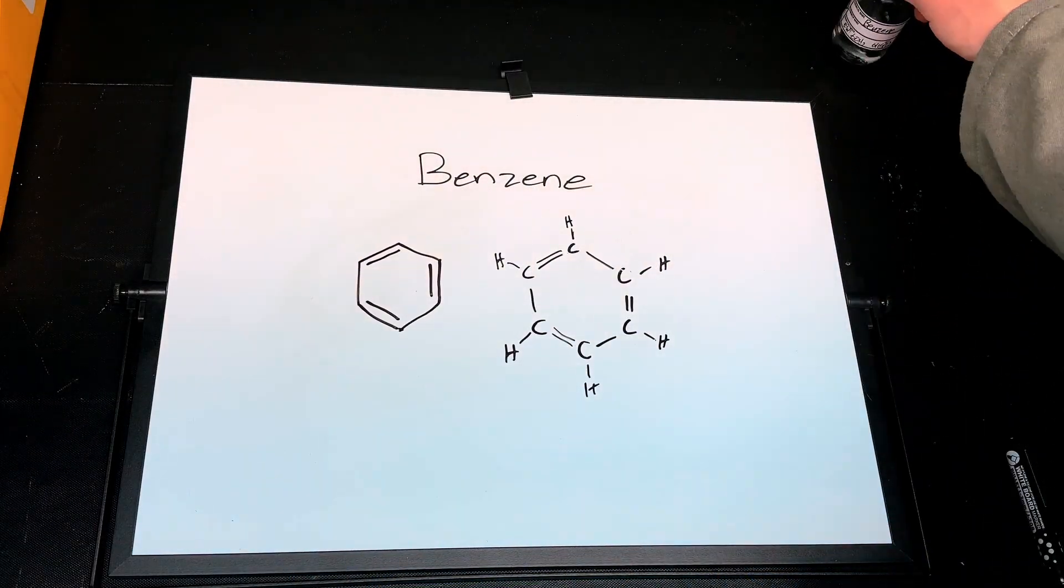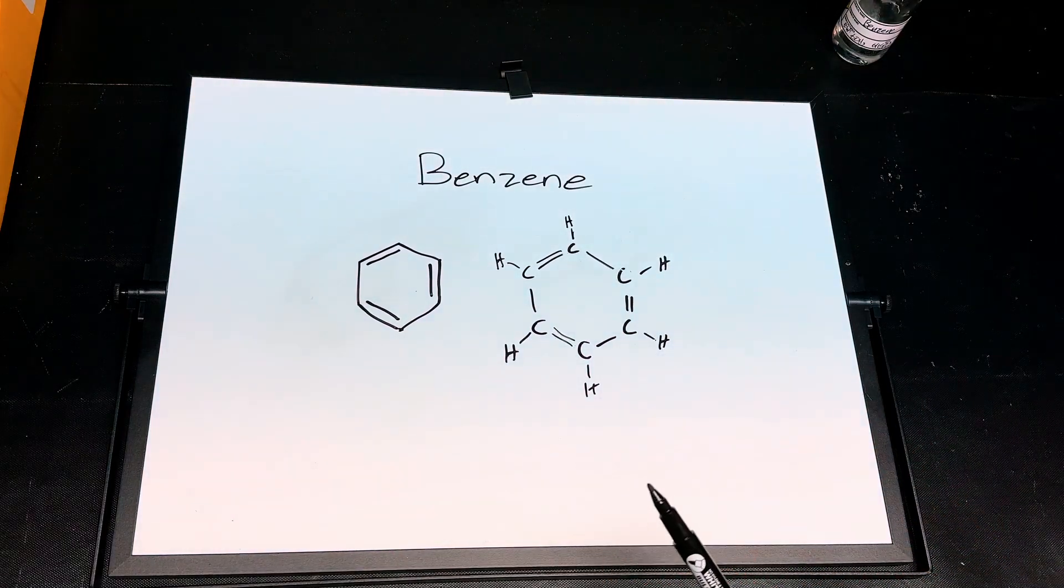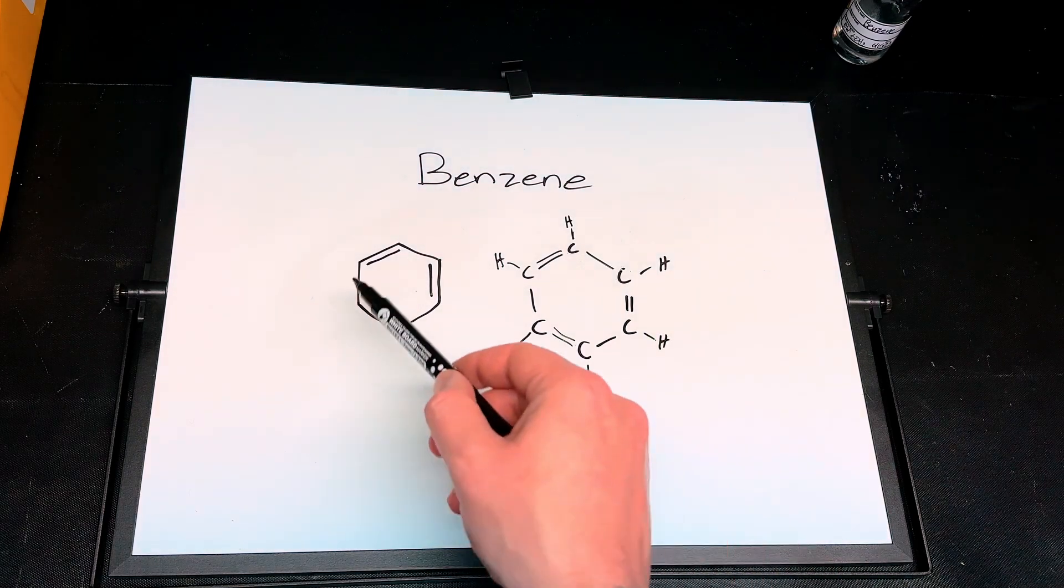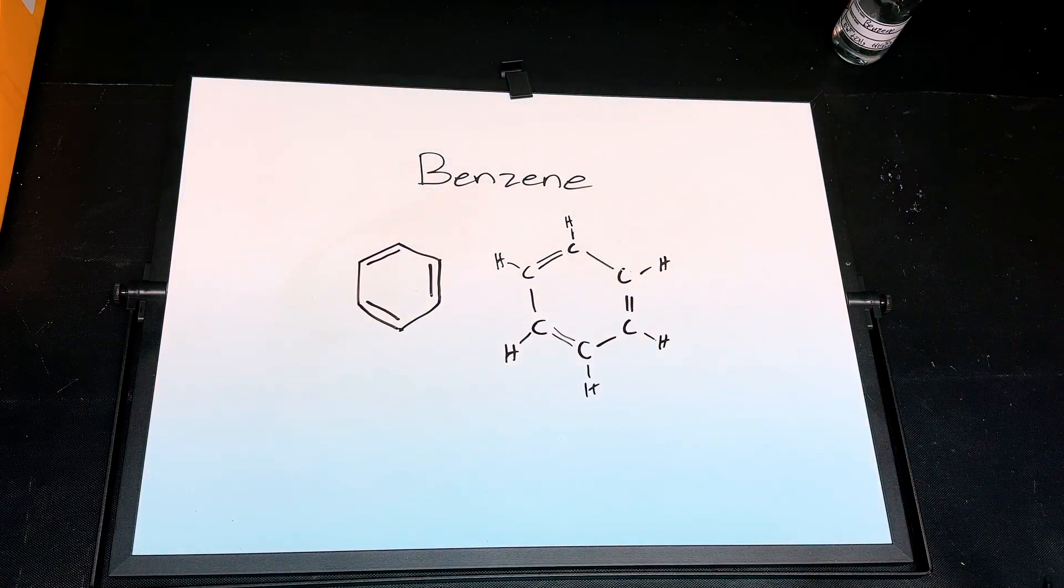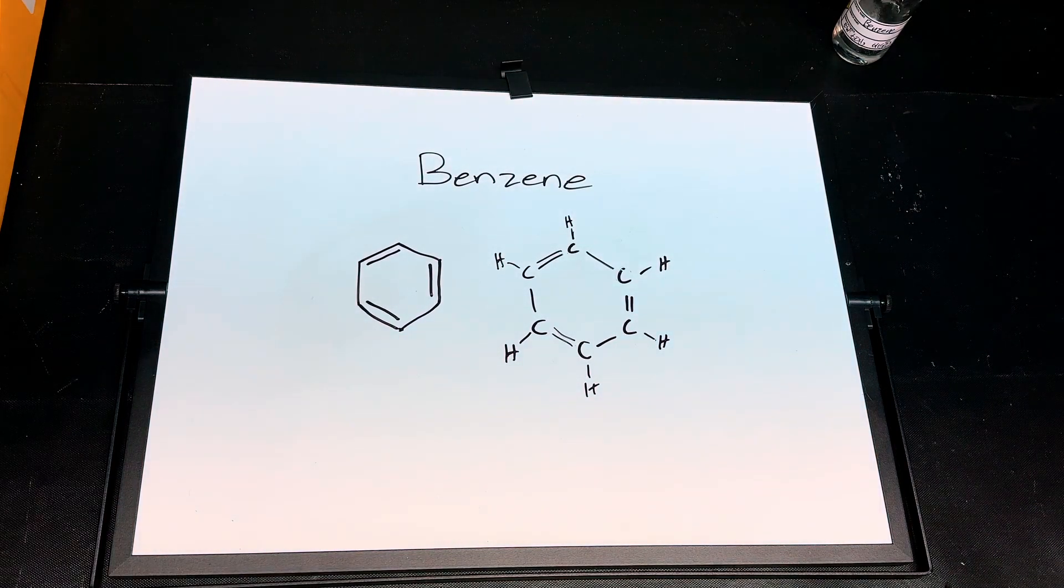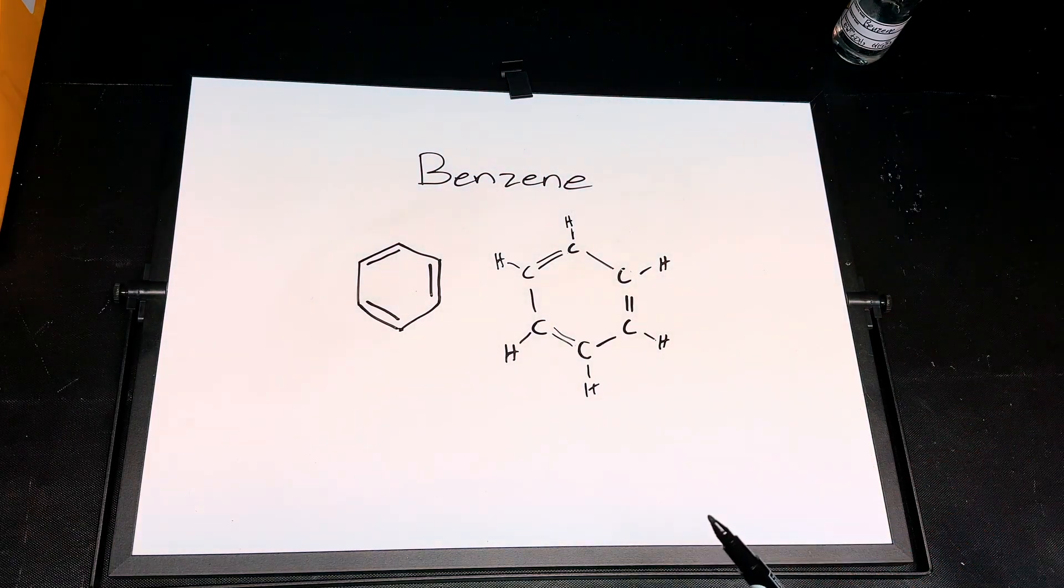This is benzene. It's a simple aromatic ring, shown here with each of its atoms and simplified here. It is such a prototypical molecule in chemistry. This substructure is in so many different compounds, but benzene itself also has a lot of uses. It even used to be used extensively as a solvent until people realized how carcinogenic it is.